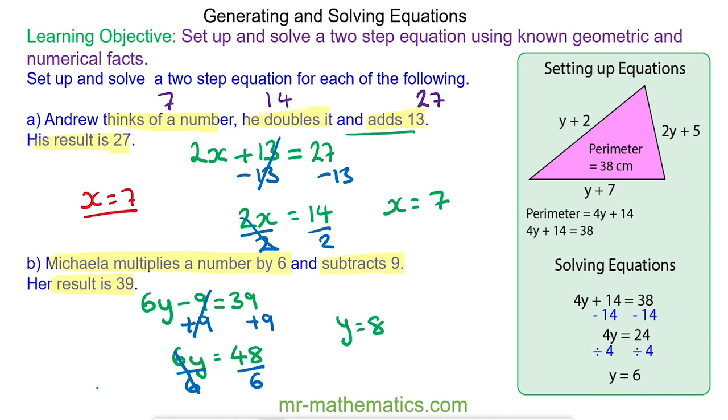We can check this works. Michaela multiplies a number by 6. So 8 times 6 is 48. 48 take away 9 does make 39. So we know y is equal to 8.